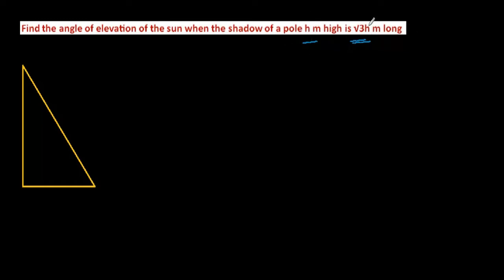The height of the pole is h meters and the shadow is root 3 h meters long. I'm taking this point as A, this as B, and this point as C.